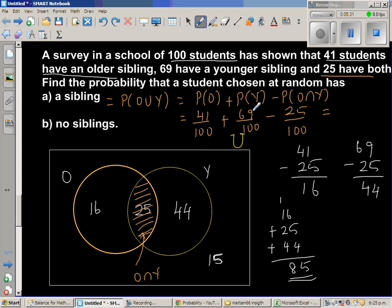Which is 41 plus 69, so let me do 41 plus 69, is 1, this is 100, so it's 110. Minus 25, which is, this is 5, so this is 85 out of 100.